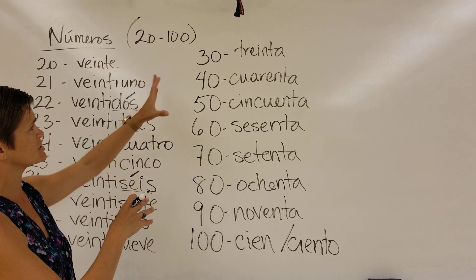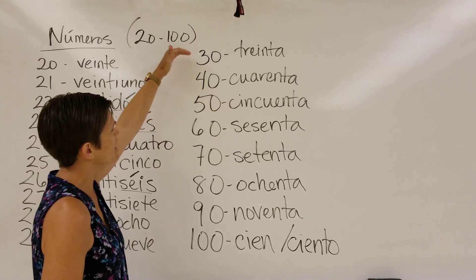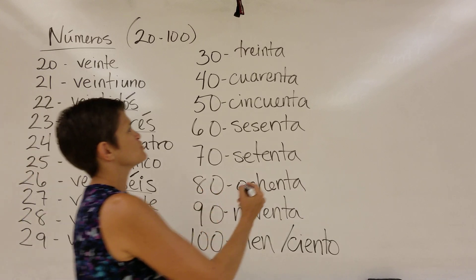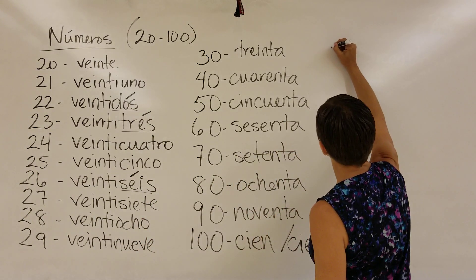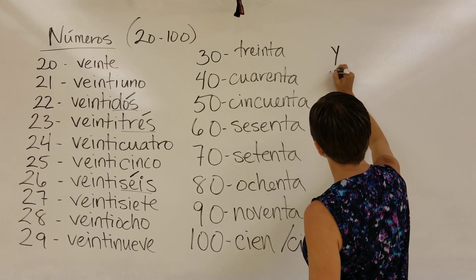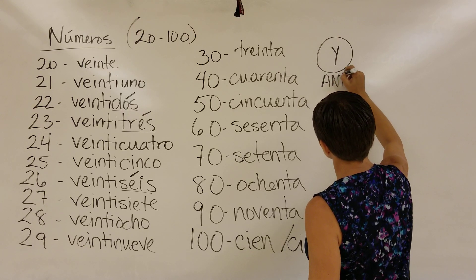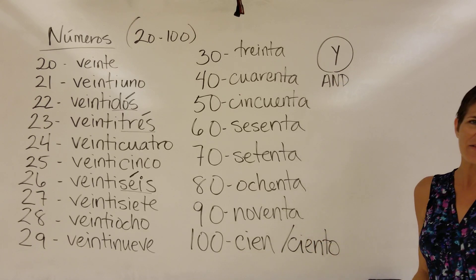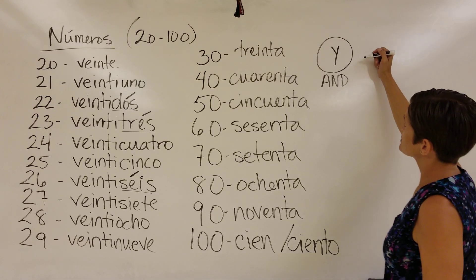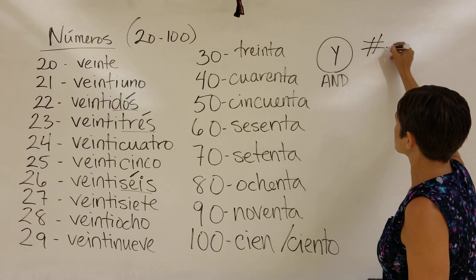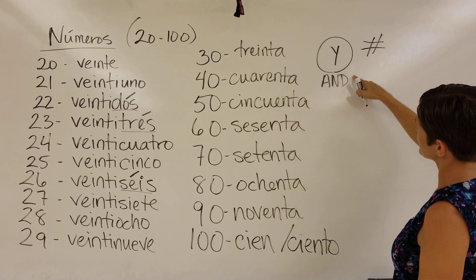So what I do, if I want to make these into like 35 or 47 or 52, I just take these and I use the word 'y'. This word right here, it means 'and'. So I could say 'y' and any other number that I want. You got these, then 'y', then the number.